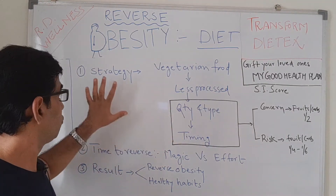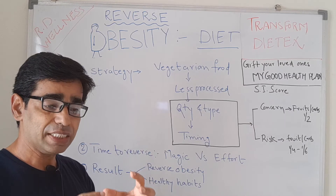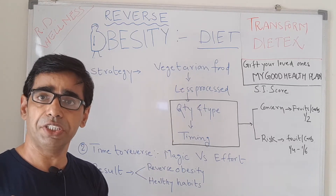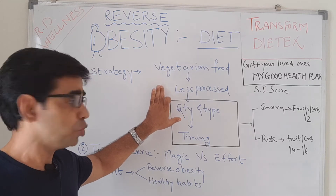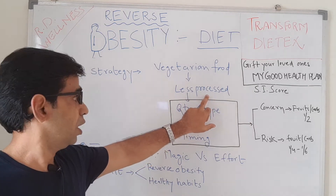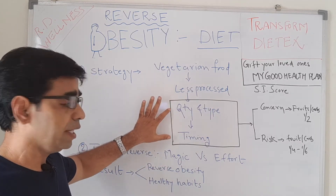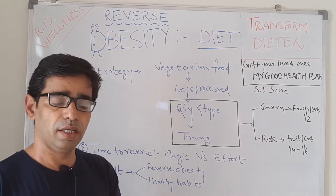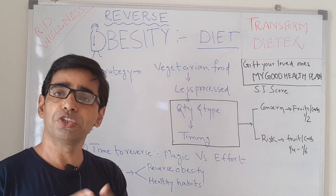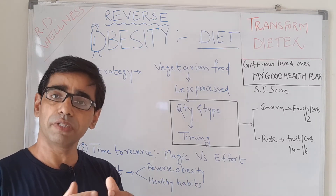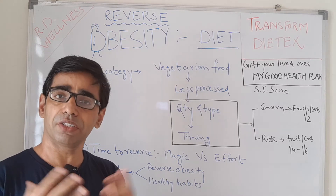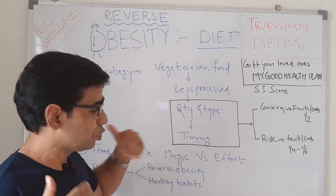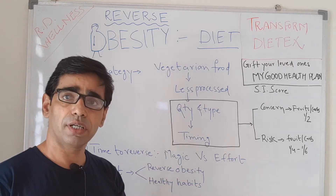There are four parts to the strategy of changing the diet. The first is that we use primarily vegetarian food — mostly less processed food rather than highly processed food. Then we control the quantity and the type of food. For example, if you are eating three or four servings of fruits per day, or eating rice or any fast or processed carbohydrate three or four times a day, we control that. We reduce the amount as well as the type of carbohydrates you are taking.